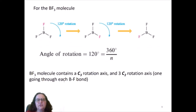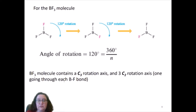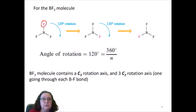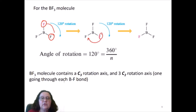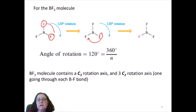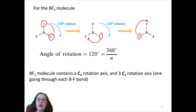Let's go back and look at the boron trifluoride molecule and identify the axes. Looking at the diagram, there's an axis that goes through the boron atom perpendicular to the plane formed by the boron and the three fluorines, and that allows us three 120-degree rotations. We can have three rotations around that axis, so this is a C3 axis and the angle of rotation is 120 degrees.